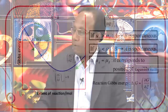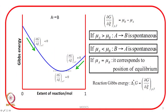This slope is called the reaction Gibbs energy. Please note: the reaction Gibbs energy is a slope — it is not simply a difference, it is the slope of the G vs. ξ plot. And this slope turns out to equal the difference in chemical potentials. Spontaneity is connected to the slope, which in turn equals the difference in chemical potentials of the products and reactants.